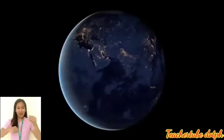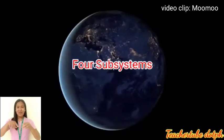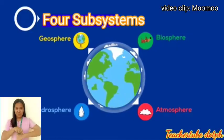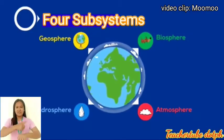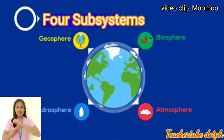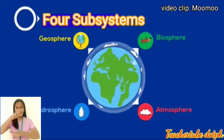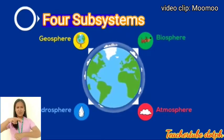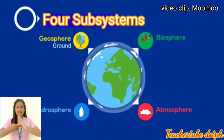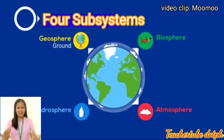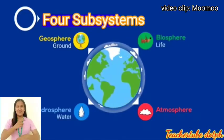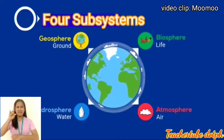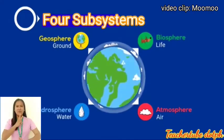Today, we're going to talk about subsystems of Earth. There are four subsystems: Geosphere, from the Latin word 'geo' meaning ground; Biosphere, from the Latin word 'bio' meaning life; Hydrosphere, from 'hydro' meaning water; and Atmosphere, from 'atmo' meaning air.